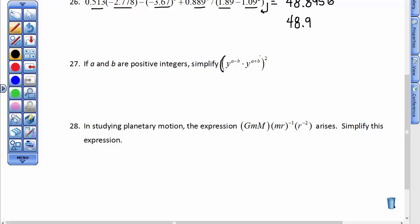When I multiply and the bases are alike, I do what's in the parentheses first, because that's what order of operations tells me to do, and then square it after the fact. When I add these exponents, when I add a minus b and a plus b, then this a and this a combine to be 2a, and this minus b and that plus b are gone. So I have y to the 2a power, and then now I need to square that. Remember, when you raise a power to a power, you multiply those exponents.